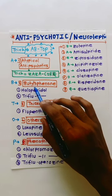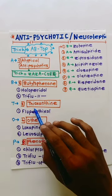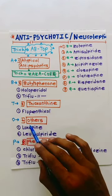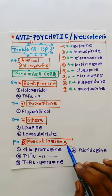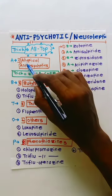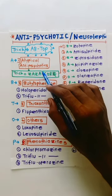B for butyrofenones, T for thiosanthines, O for other drugs, and P for phenothiazines. So first of all, atypical antipsychotics, this is very important.